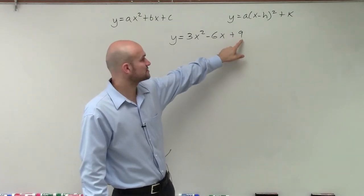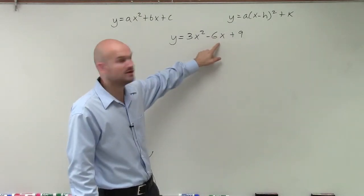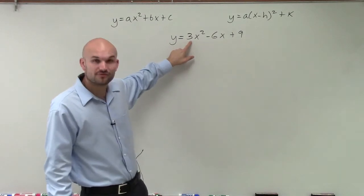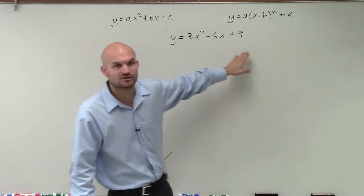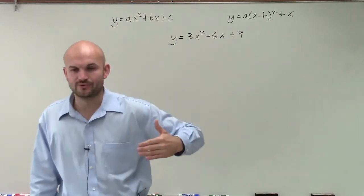And the reason being is you say, well, this is a perfect square, this is a perfect square, and this is double the square root of it. You're right, but we have a value of 3 in front of there. And if I factor out a 3, I will no longer have a perfect square trinomial out of all these.